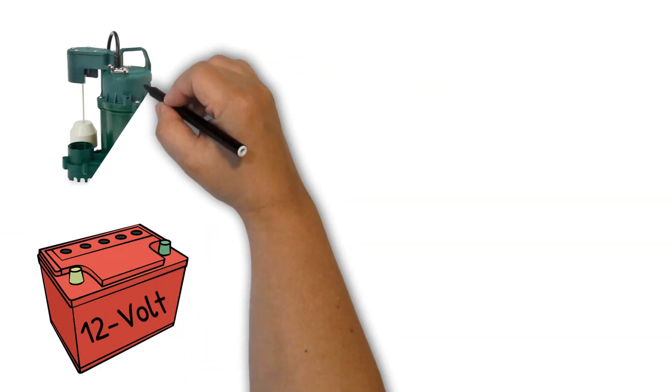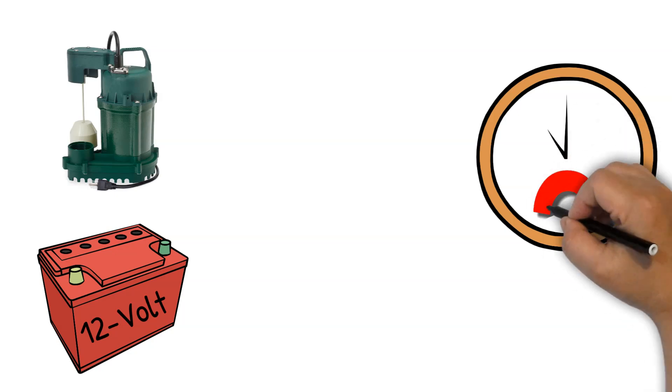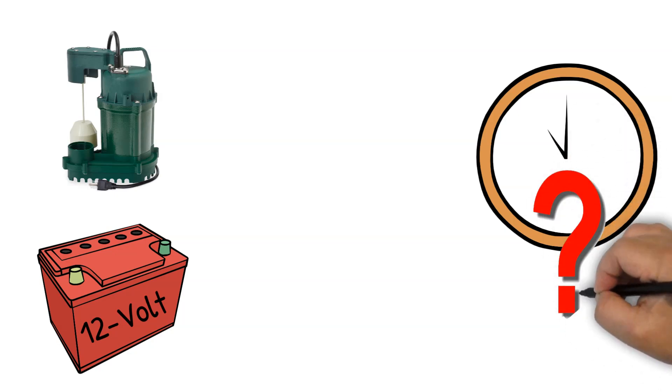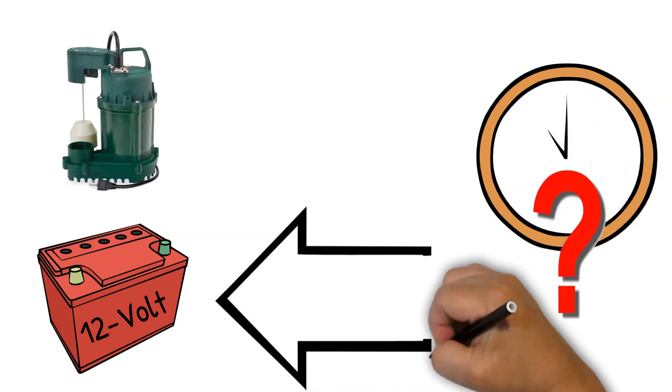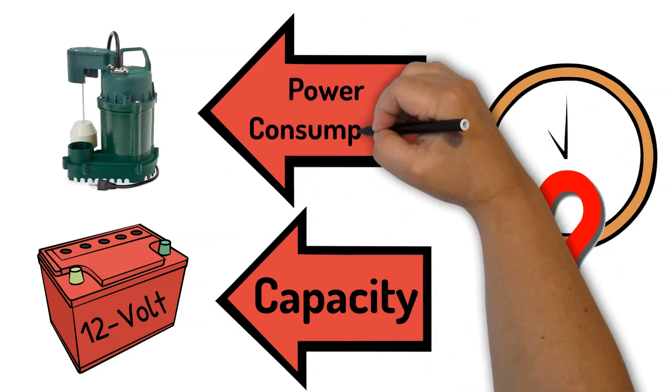All right, let's jump right into it. The answer to how long a 12-volt battery can run a sump pump depends on a couple of important factors. The capacity of the battery and the power consumption of the sump pump.